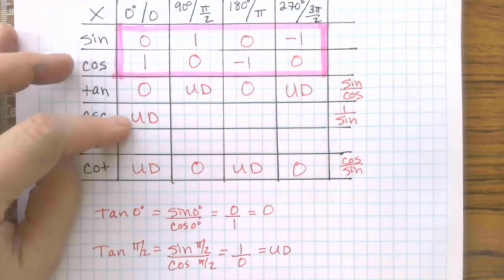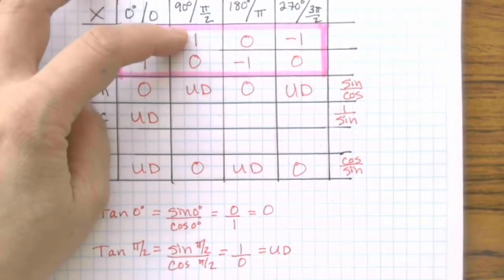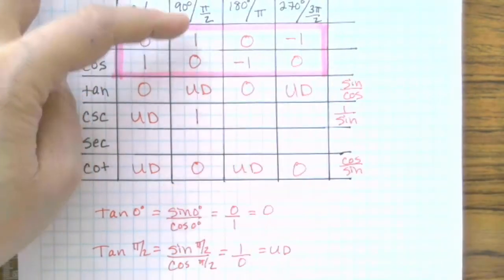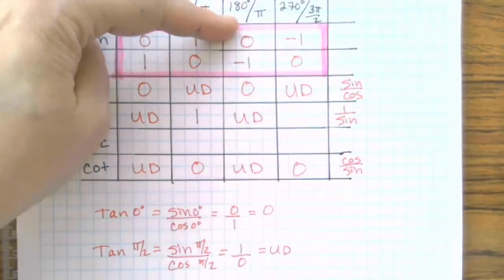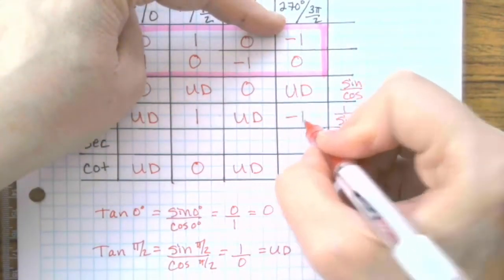When you flip the 0, it becomes undefined. When you flip a 1, 1 over 1 is 1. You flip a 0, it's undefined. Negative 1 over 1 is negative 1.